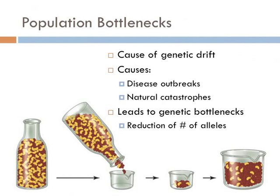Population bottleneck is an evolutionary event in which a significant percentage of a population or species is killed or otherwise prevented from reproducing. Bottlenecks reduce genetic variation and therefore the population's ability to adapt to new selective pressures such as climate change or a shift in available resources. This is a cause of genetic drift, and genetic drift can eliminate alleles that could have been positively selected by the environment. Population bottlenecks increase genetic drift, as the rate of drift is inversely proportional to population size. If severe, bottlenecks can also markedly increase inbreeding due to the reduced pool of possible mates.